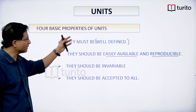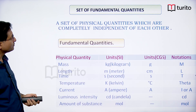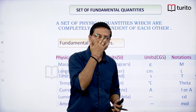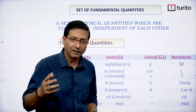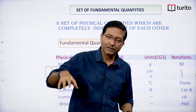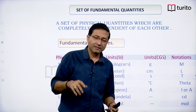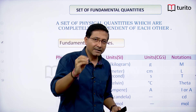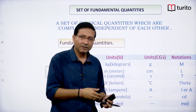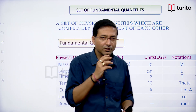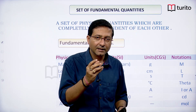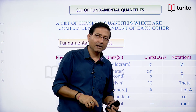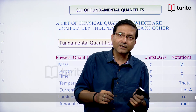Now let's talk about fundamental quantities. Physical quantities include length, mass, time, pressure, force, and momentum. Out of all these, some physical quantities have no relation with each other — they are independent. For example, length and time are independent; length is measured by a scale and time by a clock. But speed or velocity can be measured using both length and time, so velocity is a derived physical quantity, while length and time are independent, or fundamental, physical quantities.